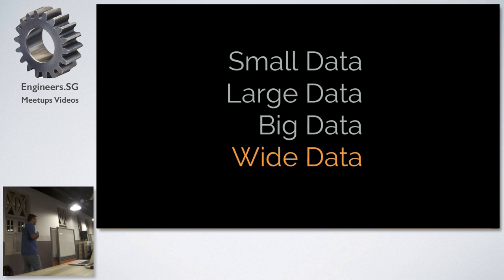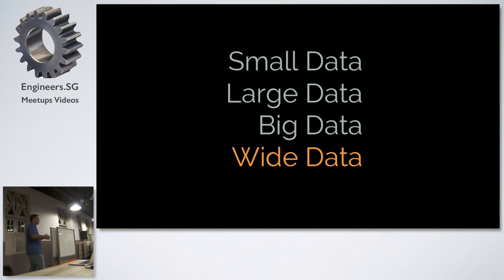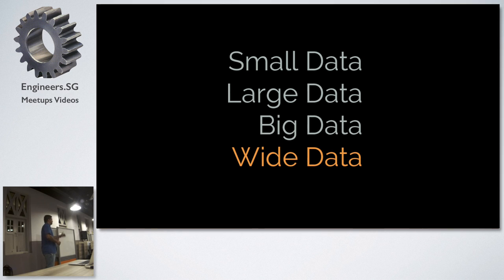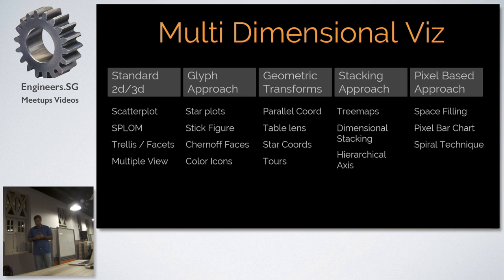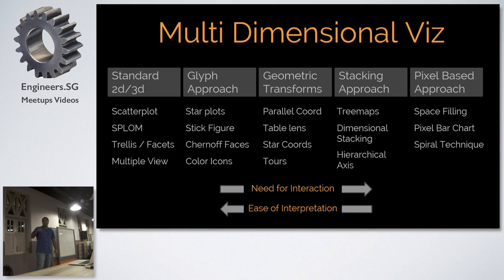Wide data is when you have many more columns, or dimensions. Right now we've been talking about X and Y — two variables — and we were varying N, the number of observations: 5, 20,000, a million. Now we're saying we have many more P's — more dimensions. To do multidimensional visualization, there are many approaches: standard approaches, glyph approaches, geometric transforms, stacking, pixel-based. As you move from standard to pixel-based, the need for interaction goes up and the ease of interpretation goes down.